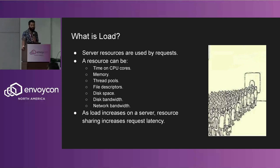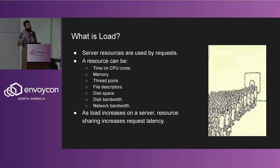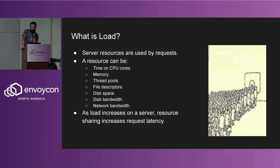Let's start with what is load. When I'm referring to load in this talk, I'm talking about Layer 7 requests that are proxied through an Envoy, and that are using resources on some application that Envoy would be proxying for. The resource on the application could be time on the CPU, core memory, the often overlooked network bandwidth and disk bandwidth. And as the load increases on a server, these things are contended, and there's not enough of it to go around for all of the active requests on the server.